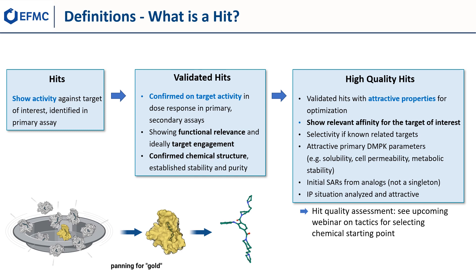Before we can proceed further, it is imperative that we define the difference between a hit, a validated hit, and a high quality hit. There are varying requirements that must be met before a hit can be promoted to a validated hit and to a high quality hit. It is necessary to point out that these are not strict definitions, and colloquially these may have slightly different interpretations in your company or institution. For the purpose of this webinar, a hit is defined as a compound which shows activity against the target of interest, identified in a primary assay. A validated hit has been further characterised — the target activity on the primary assay has been confirmed in a dose-responsive manner, the compound has shown functional relevance and ideally target engagement, the chemical structure has been confirmed, and the stability and purity has been verified.